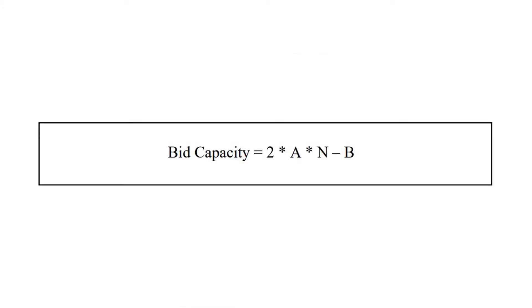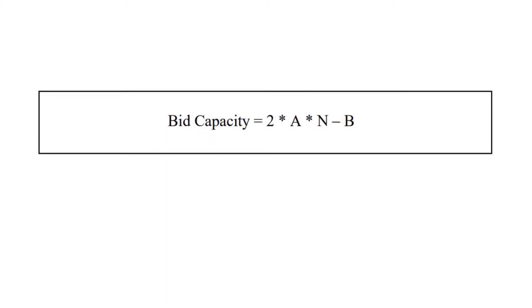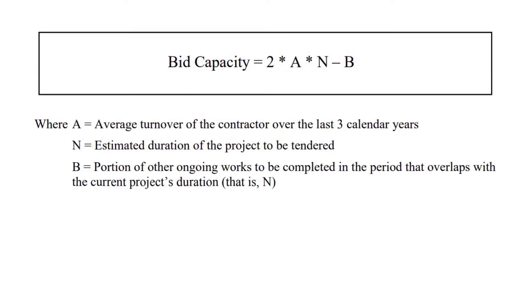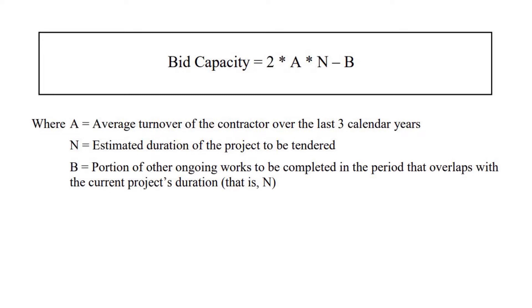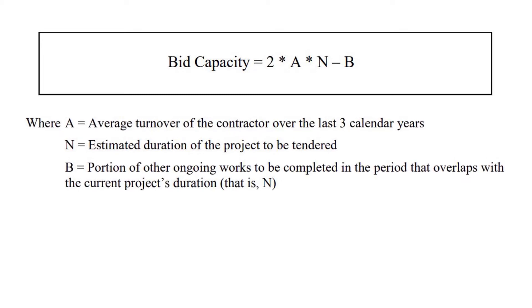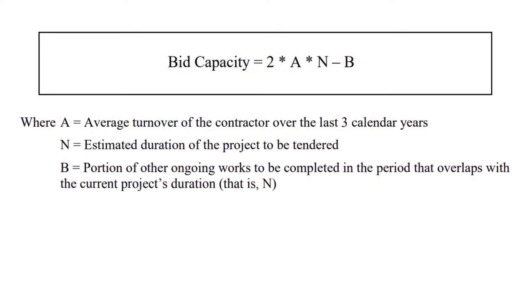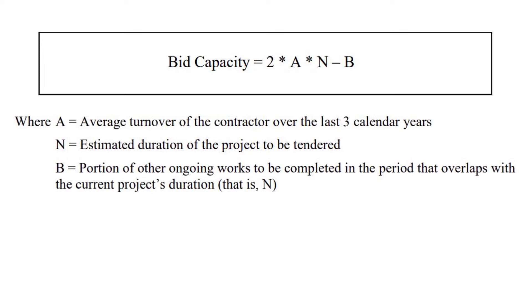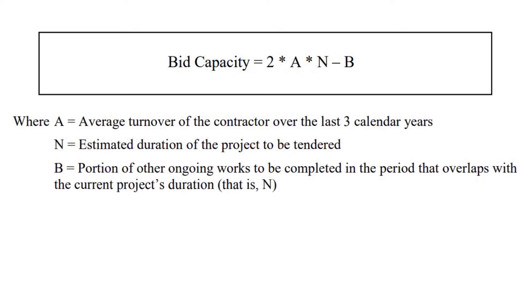This is the formula to calculate the bid capacity of a contractor. Bid capacity equals 2 × A × N − B, where A is the average annual turnover of the contractor in the past three years, N is the estimated duration of the project to be tendered in years, and B is the portion of other ongoing works to be completed in the period that overlaps with the current project's duration.